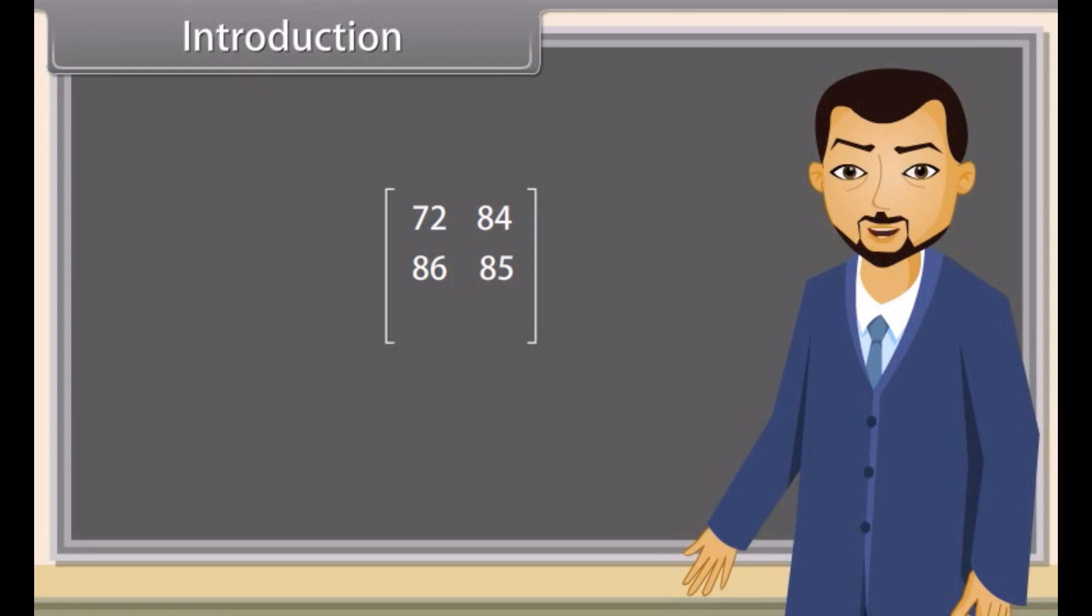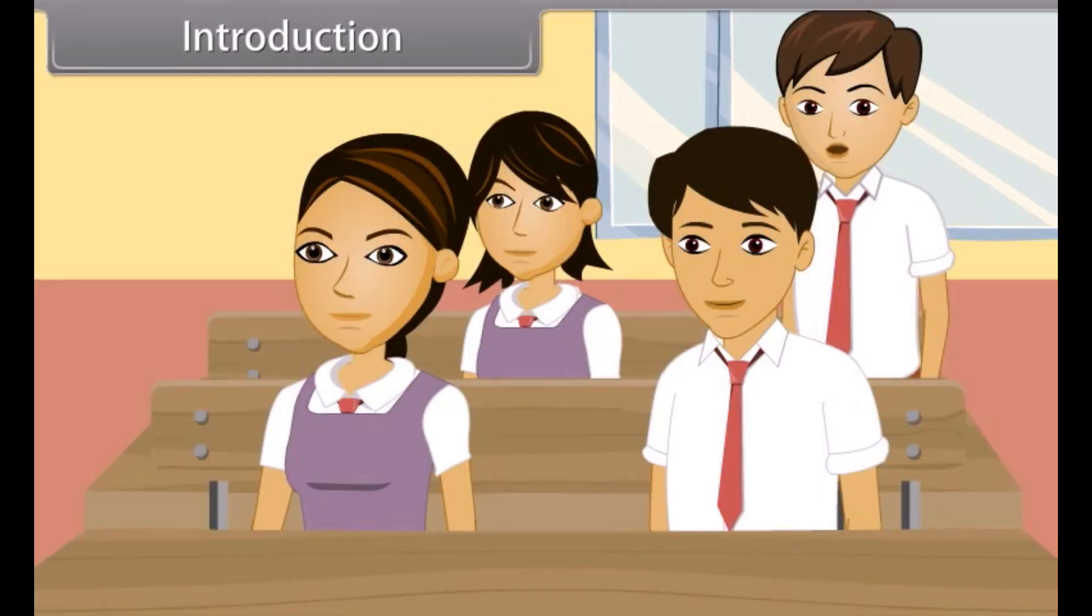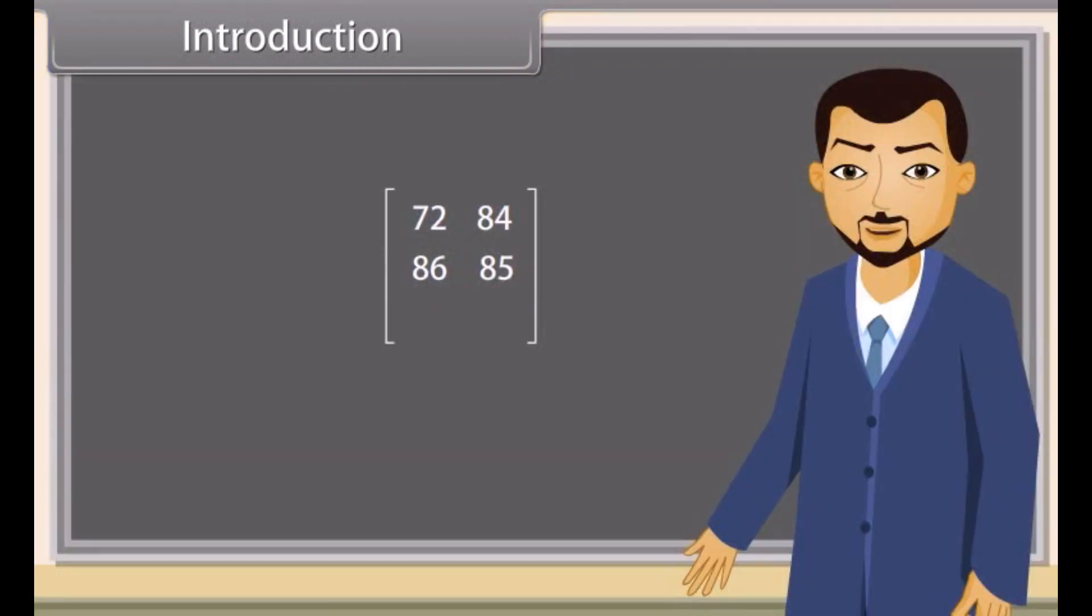Prateek, you tell me now. Teacher, 67 in science and 72 in maths. Alright. Can you see, I have written your marks in this bracket. What does this represent? Anyone?